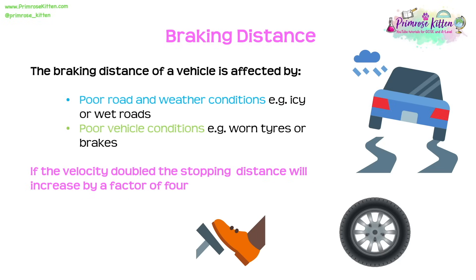The braking distance of a vehicle is affected by road and weather conditions — poor conditions such as icy or wet roads increase braking distance. Vehicle conditions also matter: worn tyres or worn brakes increase braking distance. Importantly, if velocity doubles, the stopping distance increases by a factor of four — not just two. Make sure you know that.